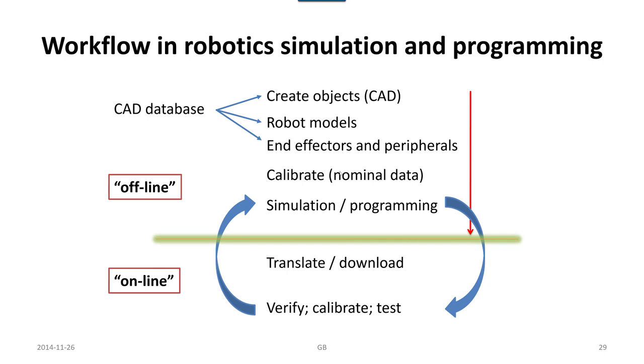Then we need to calibrate and check that the system mimics the real system. Usually there are some calibration methods to make sure that things fit as it is, if it is existing. In some cases we just do something that doesn't exist in the physical world and then we can skip this part.